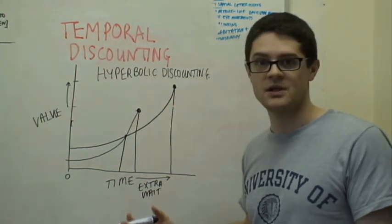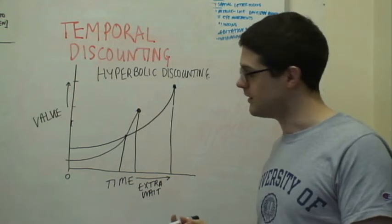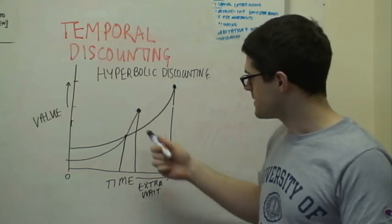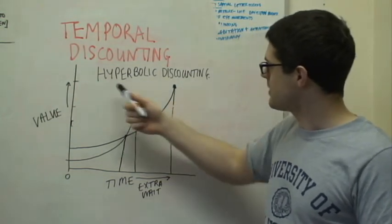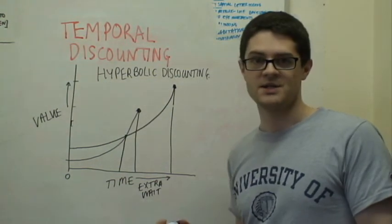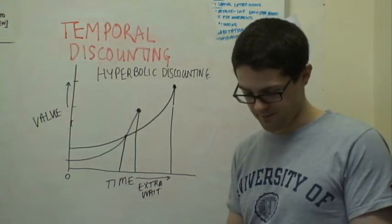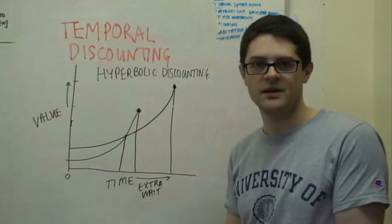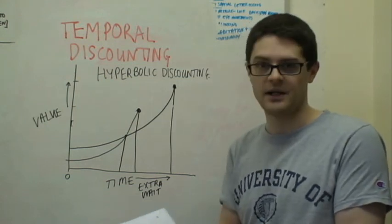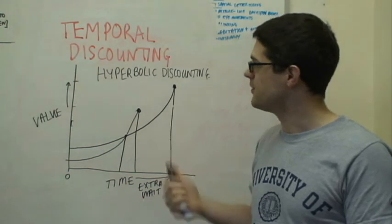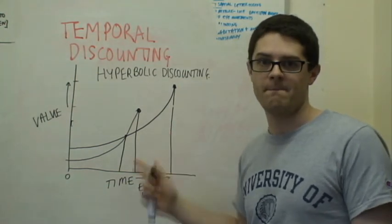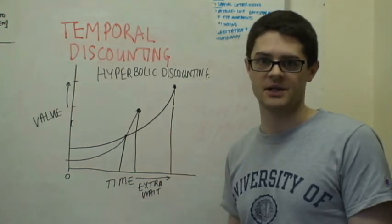There are loads and loads of different examples of this, which you'll find in the books. And this is what people do. And this hyperbolic discounting is basically the explanation for that. So hopefully that makes things slightly clearer. Loads more stuff to do with this in the book, but this is the only real complicated stuff.